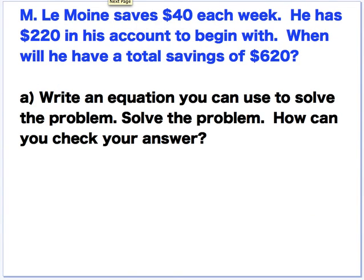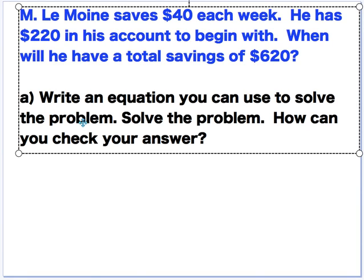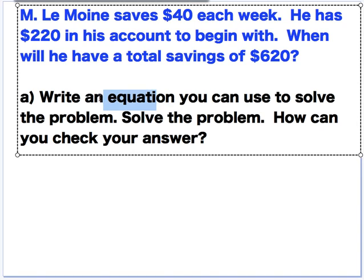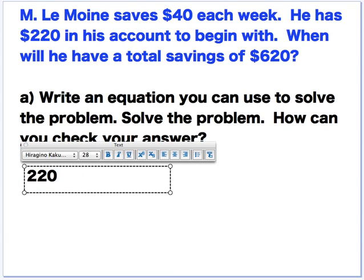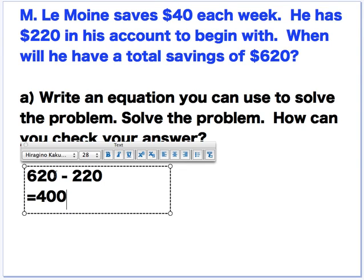So you get a problem sometimes. Like Mr. Lemoyne saves 40 bucks each week. He has 220 in his account to begin with. When will he have a total savings of 620? You need to write an equation to solve this problem, and then solve the problem. So you're starting off with 220. So you're starting with $220. And I want to find out when I'm going to have a total savings of 620. So I'm going to take my 620, and I'm going to subtract 220, which is equal to 400. Because this is the amount that I want to get to, but I already have 220. So basically I'm finding out how long is it going to take for me to earn $400.